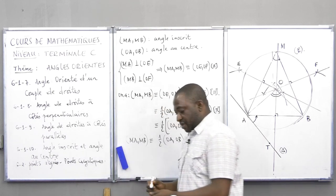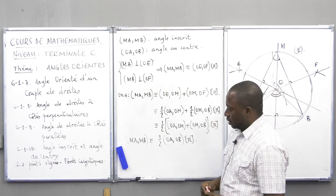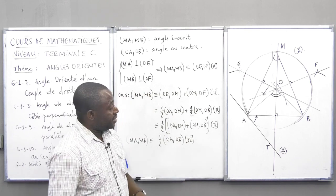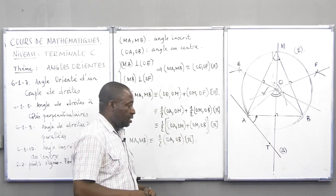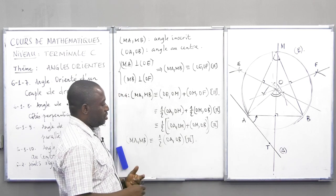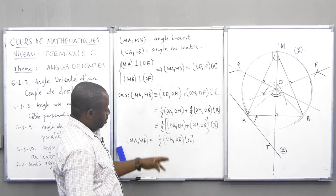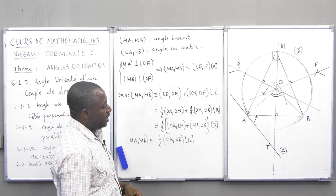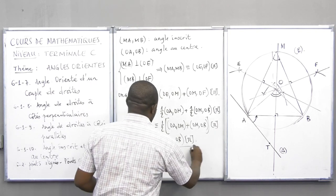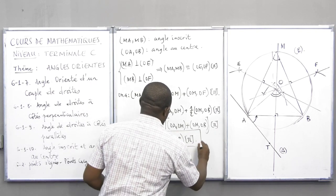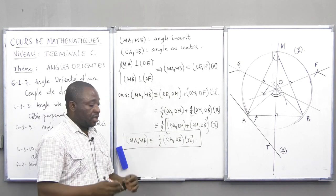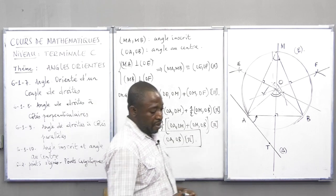Cela veut dire que lorsqu'un angle inscrit et un angle au centre interceptent le même arc sur le même cercle, l'angle inscrit est tout simplement la moitié de l'angle au centre. Ou en d'autres termes, l'angle au centre sera le double de l'angle inscrit. Voilà un théorème très fondamental de géométrie.